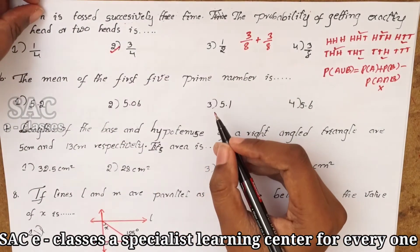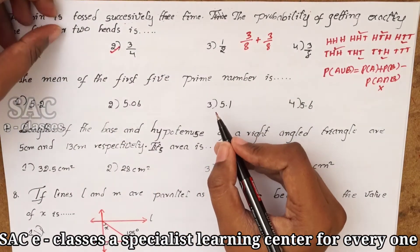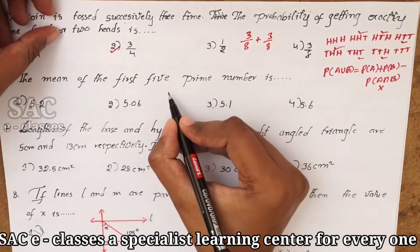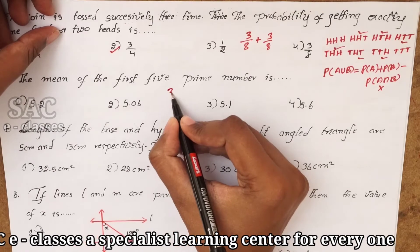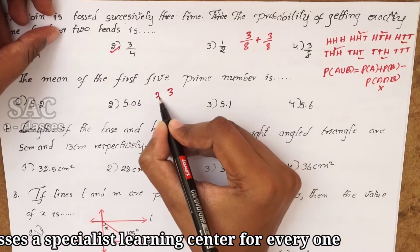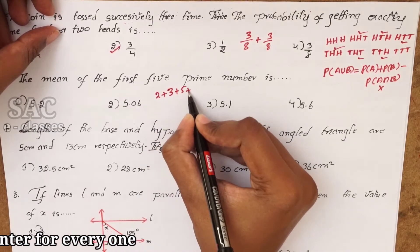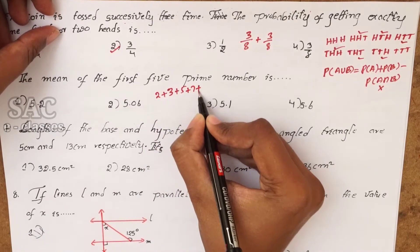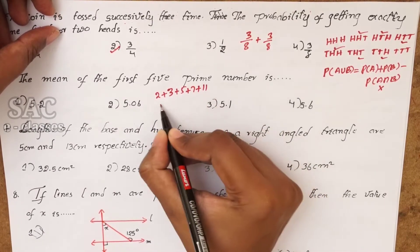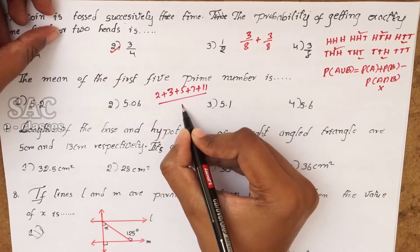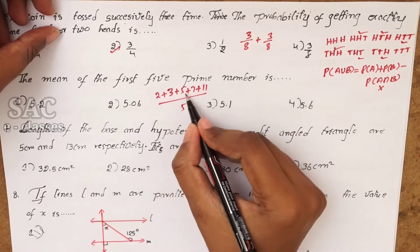The mean of the first 5 prime numbers is very simple. 2 + 3 + 5 + 7 + 11 = 28, divided by 5.